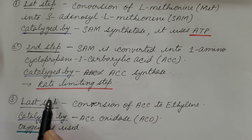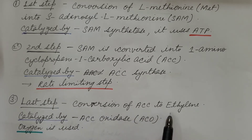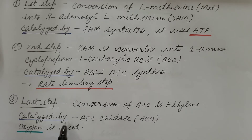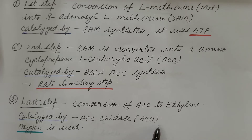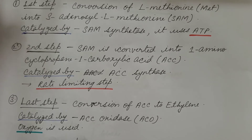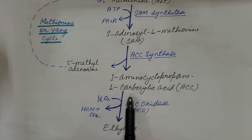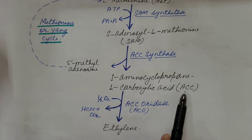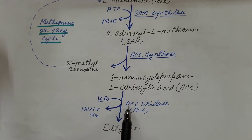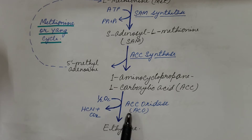The third and last step is the conversion of ACC to ethylene. This step is catalyzed by ACC oxidase (ACO), and this enzyme uses oxygen. So 1-aminocyclopropane-1-carboxylic acid is converted into ethylene in the presence of ACC oxidase and oxygen.